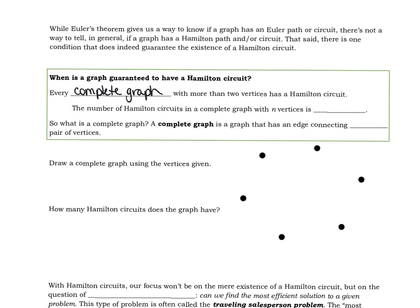Every complete graph with more than two vertices has a Hamilton circuit. It's got to have more than two because if there are only two vertices, you can't necessarily get back to where you started. The number of Hamilton circuits in a complete graph, if there are n vertices, is (n-1) factorial.